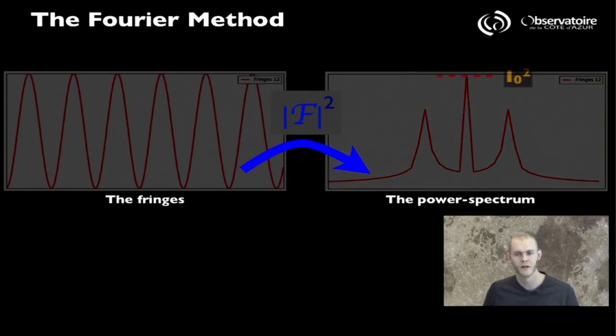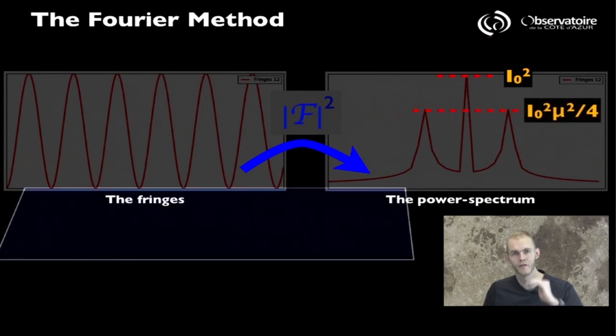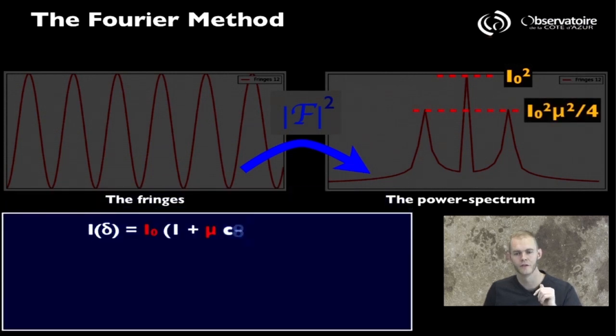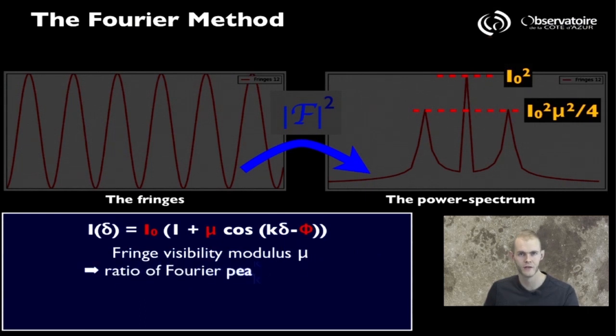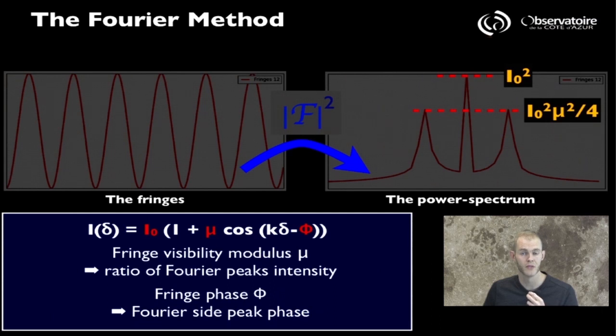Now, how does that help you extract the information you're looking for? Well, quite simply, the levels of intensity of the different peaks, the central one and the side lobe ones, are directly related to the intensity, the mean intensity, and the modulus function.